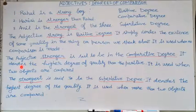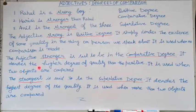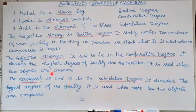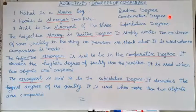The adjective 'stronger' is said to be in the comparative degree. It denotes a higher degree of quality than the positive. It is used when two objects are compared. So in the second sentence, 'stronger' is the comparative degree because it is a higher degree of quality.